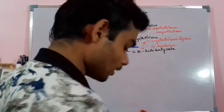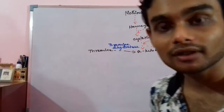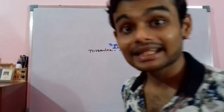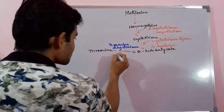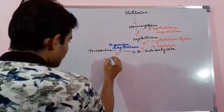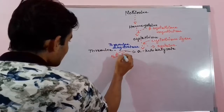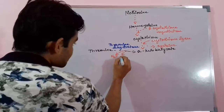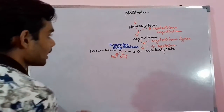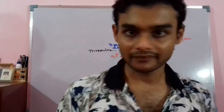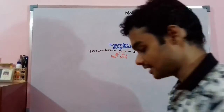Dehydratase helps in removal of the water molecule — the H₂O molecule. It drops out H₂O and also helps in deamination, that is removal of NH₄⁺ ions, thus giving rise to alpha-ketobutyrate.